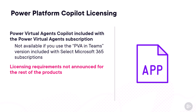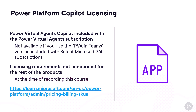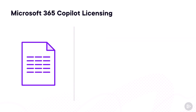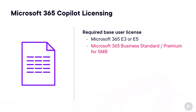For the rest of the Power Platform, the licensing requirements for Copilot had not been announced at the time of recording this course in August 2023. You will find the most up-to-date Power Platform licensing information at the link inside the slides. Next, for Microsoft 365 Copilot, the requirement is a base user license, which needs to be either Microsoft 365 E3 or E5 for enterprises, or Microsoft 365 Business Standard or Business Premium for small and medium businesses.